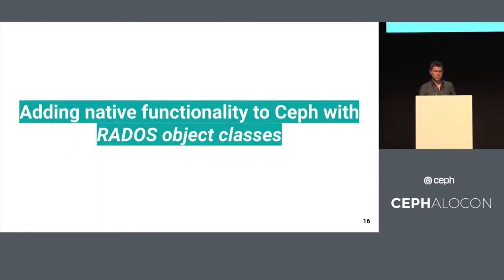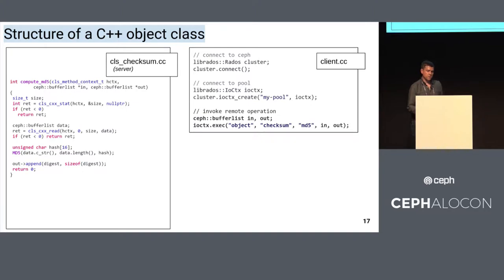In this section, we're going to actually develop that object class. On the left is clschecksum.cc — a C++ file we're going to compile and insert into the server. This contains the functionality that implements our new MD5 method. On the right is the client-side code we were just looking at, with the invocation of this method at the bottom. Let's walk through the code for computing the MD5 sum.